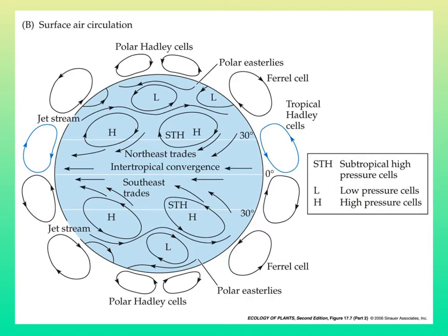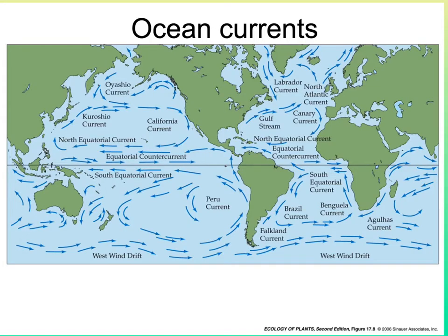There are equatorial — or tropical — Hadley cells, the Ferrel cells in the temperate regions, and the polar Hadley cells. These exist in cross-section but can be envisioned as tubular bands around the surface of the earth. Because the earth is turning, the Coriolis effect creates trade winds in different directions and also ocean currents. Ocean currents are clockwise in the northern hemisphere and counterclockwise in the southern hemisphere.